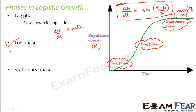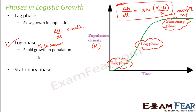In the log phase, looking at the graph, the increase is very fast. As time passes, the value of N increases, and as N increases, dN/dt also increases. A higher dN/dt means rapid growth, so we see rapid population increase during this phase.